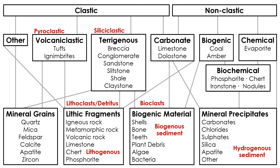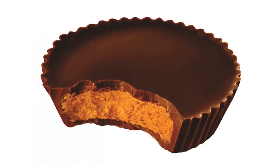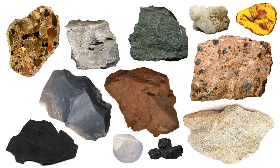In summation, classifying sedimentary rocks is a somewhat messy affair — there is no perfect way to do it. We just have to recognize that some rocks may be similar in one way and different in another. As a rule, whenever you think about a rock, you need to be mindful that it may actually be like a peanut butter cup: not entirely chocolate, not entirely peanut butter, but something in between.